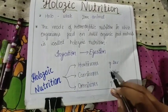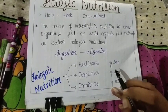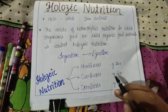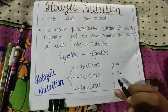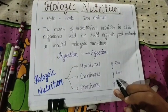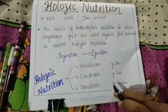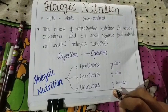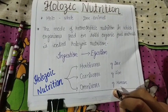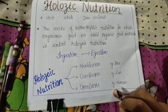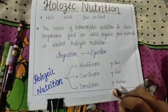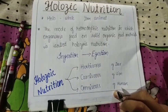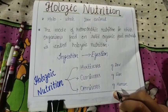In herbivores, for example deer, they eat green leafy grass. In carnivores, for example lion, they eat only flesh. In omnivores, for example humans, we eat both plants and flesh. Some people are vegetarians, but humans are classified as omnivores because we eat both plant matter as well as flesh.